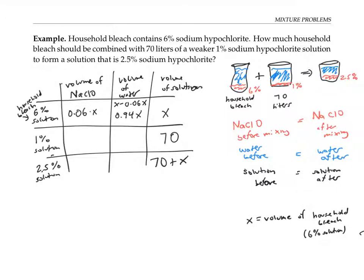Following the same reasoning for the 1% solution, 1% of the 70 liters is the sodium hypochlorite. So that's going to be 0.01 times 70, or 0.7. The volume of water in that solution is going to be 99% or 0.99 times 70. That works out to 69.3.